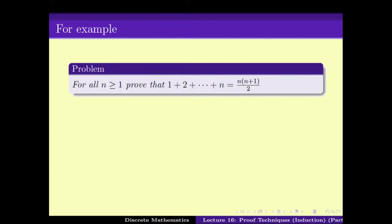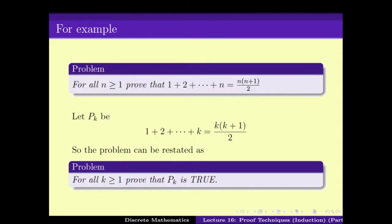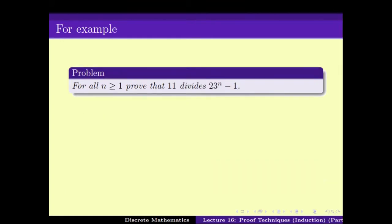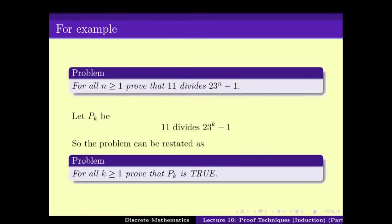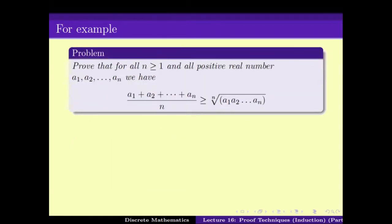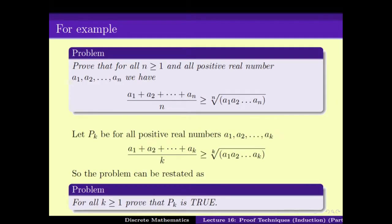The subproblems are indexed by some parameter of the input. So the statement A implies B gets written as P1 AND P2 AND so on to infinity — the AND of an infinite number of problems. We have seen how to split up some problems into this infinite number of subproblems naturally. In particular, we saw how to split up the sum of the first n integers equals n(n+1)/2, by defining Pk as the problem of proving that the sum of 1 to k equals k(k+1)/2, and restating the problem as: for all k, Pk is true.